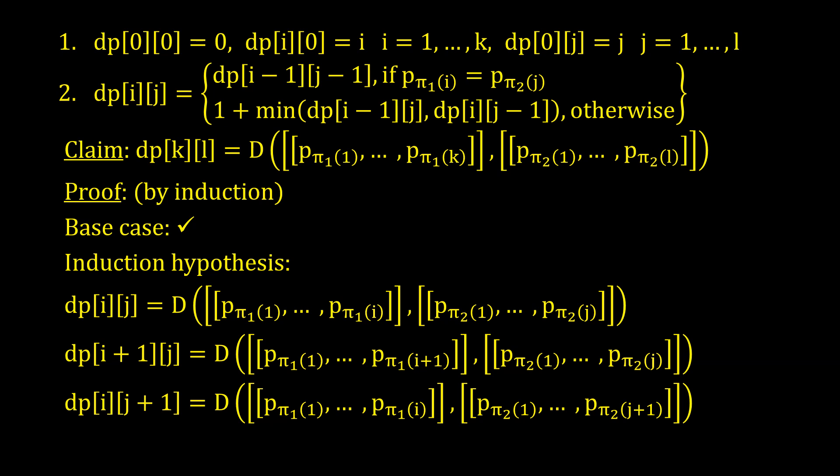Our induction hypothesis. dp[i][j], dp[i+1][j], and dp[i][j+1] all correctly represent the dissimilarity of the corresponding sub-arrangements.